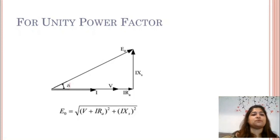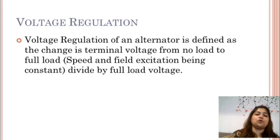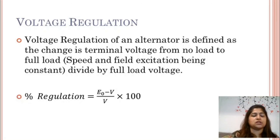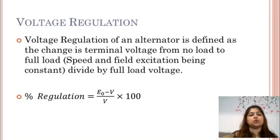Ultimately, to get the voltage regulation: it is the change in terminal voltage from no load to full load with speed and field excitation constant, divided by the full load voltage. As a percentage, voltage regulation is given by (E0 − V) / V × 100. You find E0 using the synchronous impedance method, and V and the power factor are given — then you can find the voltage regulation.